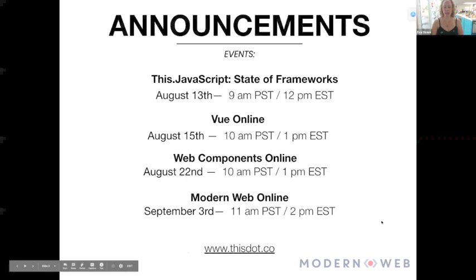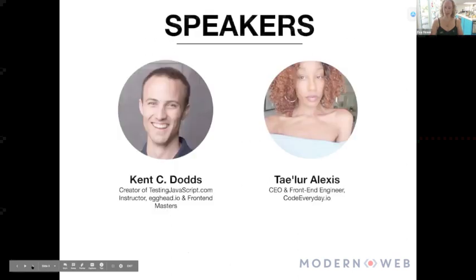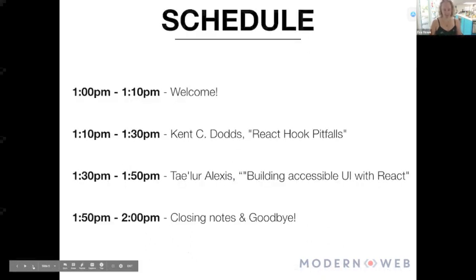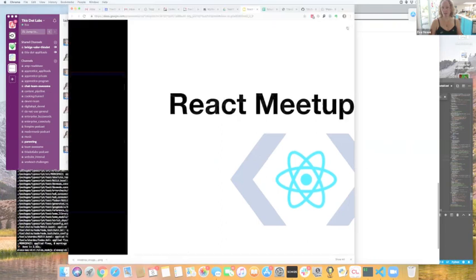A little bit of announcements before we get started today. We have a bunch of upcoming events: this.JavaScript Data Frameworks is coming up on August 13th, our first Vue Online is coming up on August 15th, Web Components Online is going to be August 22nd, and then we have a Modern Web Online coming up on September 3rd. Our two speakers today are Kent and Taylor. Kent will go first with React Hook Pitfalls, and then Taylor will go with Building Accessible UI with React, followed by closing notes.